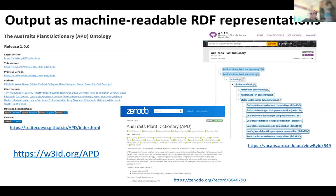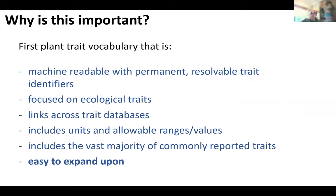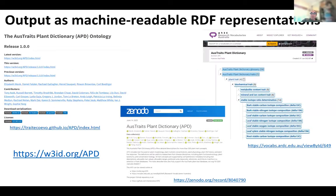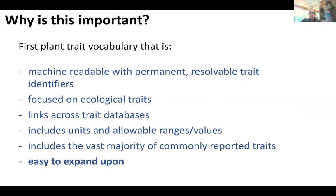We have a registered namespace with w3id.org, and each of the 500 traits has a unique resolvable identifier linking back to our GitHub repository, where all 500 traits and their metadata can be explored in a human-readable format, with links to machine-readable serialisations — TURTLE files and TRIPLES. These files are also in a Zenodo repository and at Research Vocabularies Australia, so there are multiple portals where they can be explored.